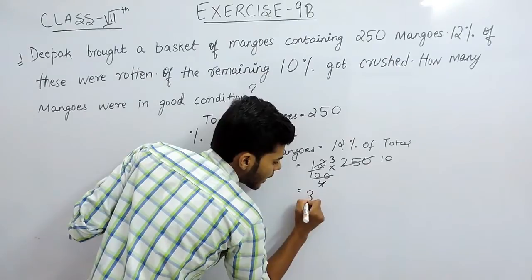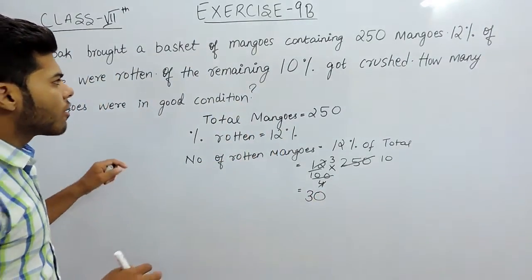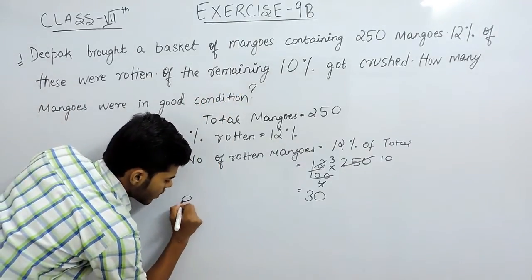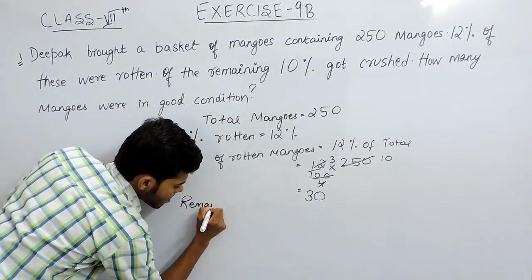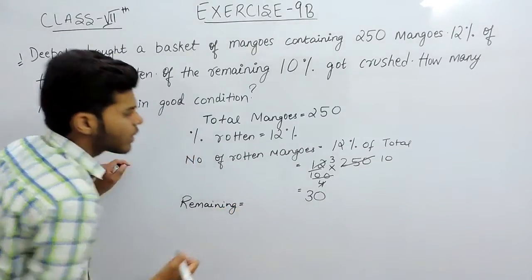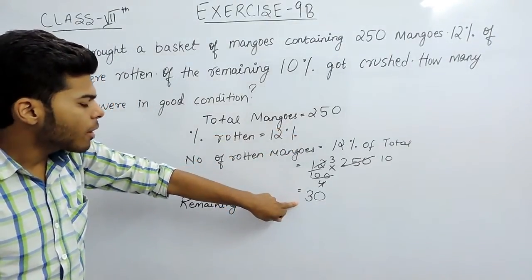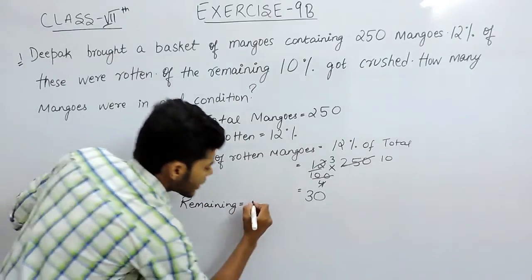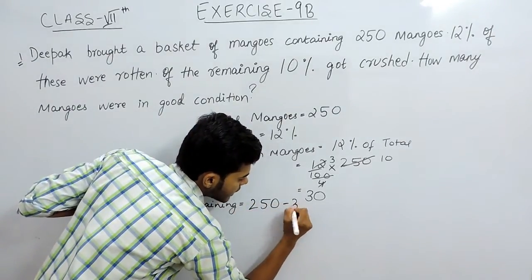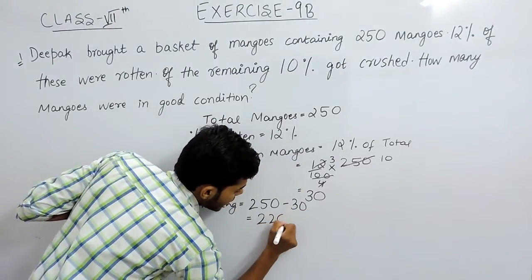That will be 30. So 30 mangoes got rotten. Now we will find the remaining mangoes. Remaining mangoes will be equal to 250 minus the number of mangoes that got rotten, that will be 30. So 250 minus 30 equals 220.